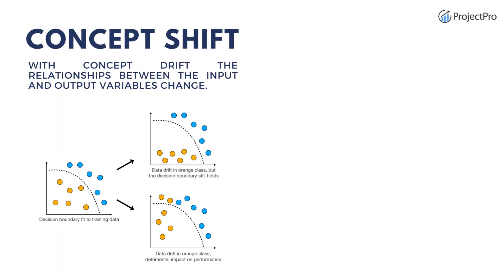The third type of shift is concept shift. Concept shift happens when there is a change in the relationship between the independent and the target variables. This means the distribution of the target and the independent variable remains the same, but the relationship between them has changed. It happens in time series data with a seasonality effect — for example, when we train data with only one month but it does not generalize for another month.